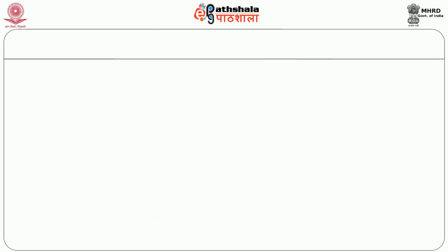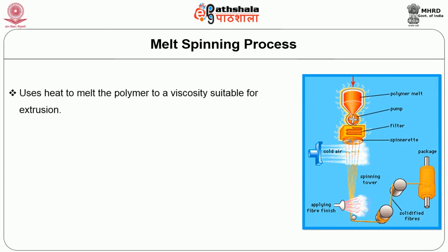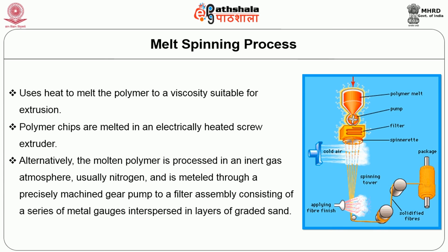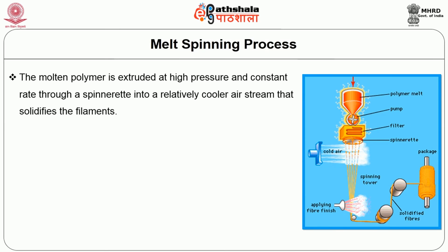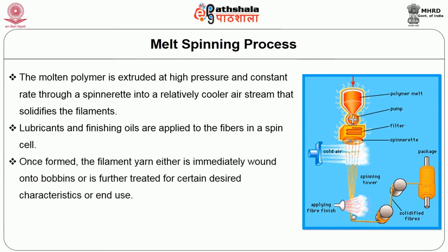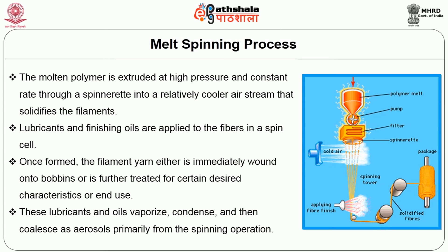In the melt spinning process, heat is used to melt the polymer to a viscosity suitable for extrusion. Polymer chips are melted in an electrically heated screw extruder. Alternatively, the molten polymer is processed in an inert gas atmosphere, usually nitrogen, and metered by a precisely machined gear pump to a filter assembly consisting of a series of metal gauges interspersed in layers of graded sand. The molten polymer is extruded at high pressure through a spinneret into a relatively cooler air stream that solidifies the filament. Lubricants and finishing oils are applied to the fibers in a spin cell. The filament yarn is then either wound onto a bobbin or further treated for certain desired characteristics. These lubricants and oils vaporize, condense and then coalesce as aerosols primarily from the spinning operation.